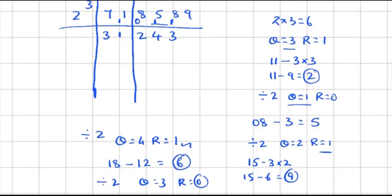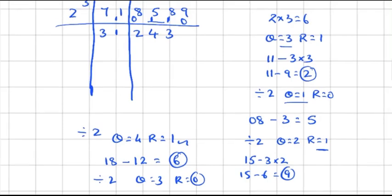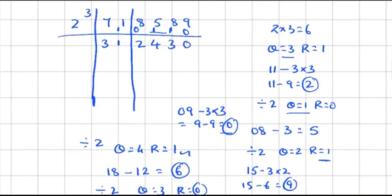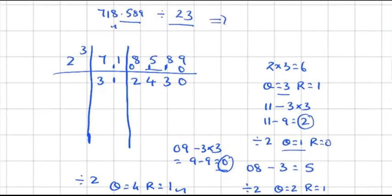Now subtract 09 minus 3×3=9: 9 minus 9 gives 0. Since the value is 0, dividing 0 by 2 gives quotient 0. So the final answer for 718.589 divided by 23 is 31.2430.